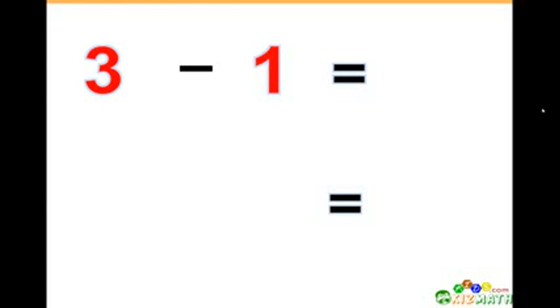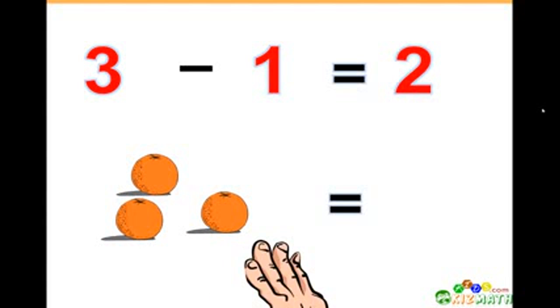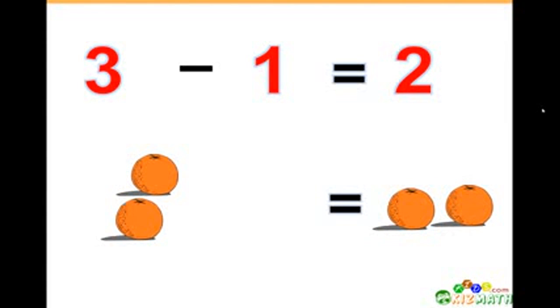Three minus one equals two. If we have three oranges and we take away one orange, we only have two oranges left.